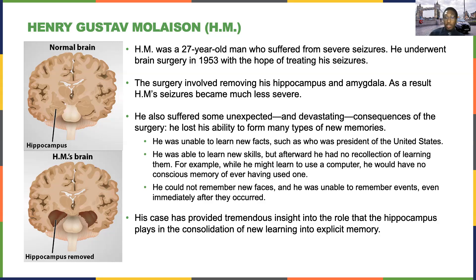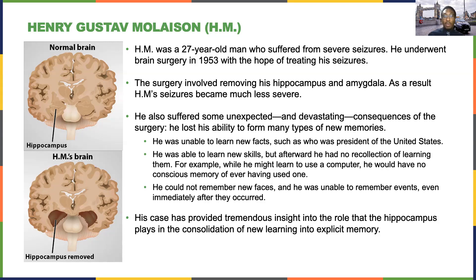However, he also suffered some unexpected and really devastating consequences in that he was unable to form many types of new memories. He was unable to learn new facts. He was able to learn new skills, but after learning those skills, he would have no recollection of learning them. For example, he would learn how to use a computer, but then after a few moments, if you were to ask him, he would have no conscious memory of ever having used one. He also could not remember new faces, and had difficulty remembering events even moments after they occurred.